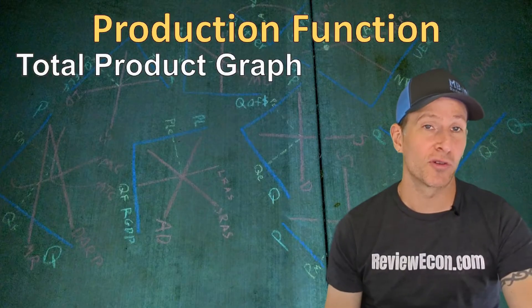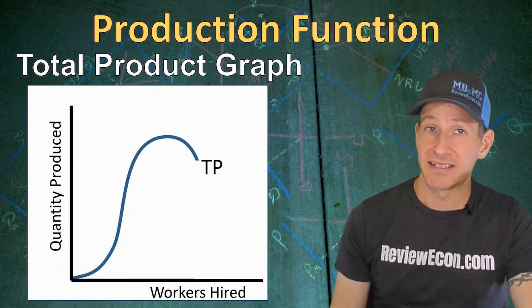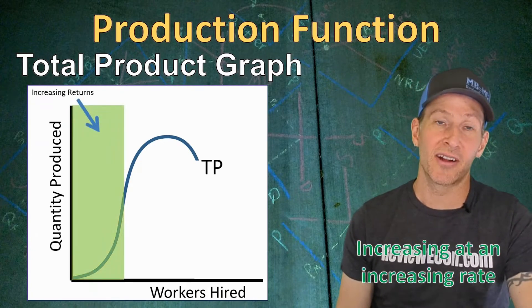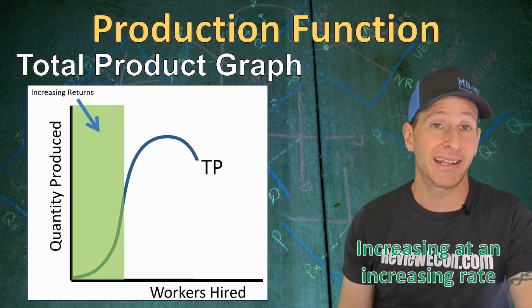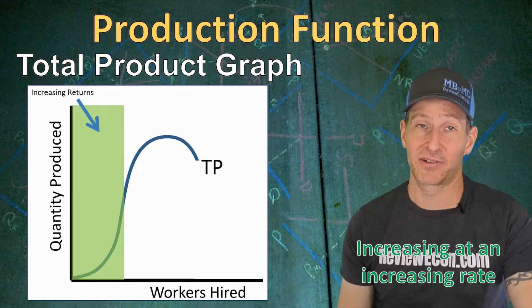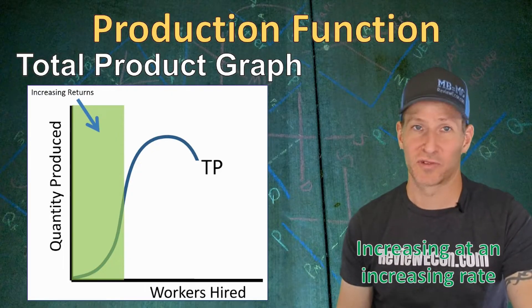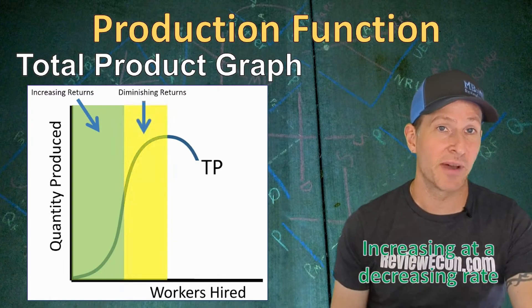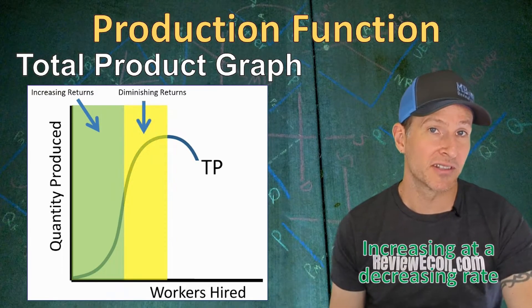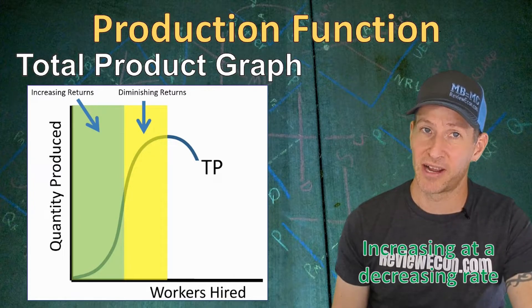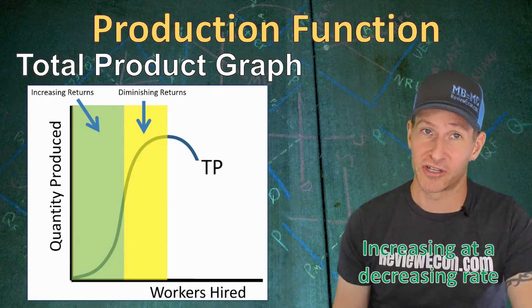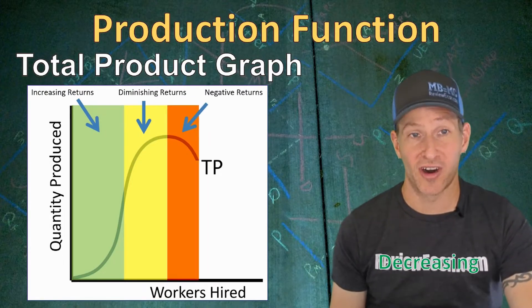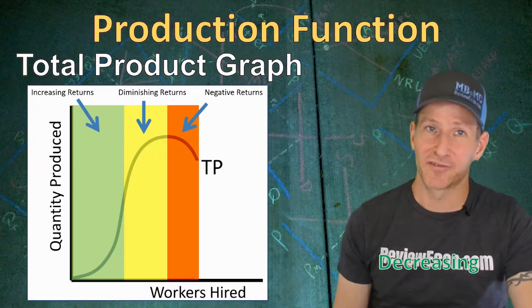If we go ahead and graph out the total product curve for this firm, we see different phases of production as more workers are hired. At low quantities of workers hired, each additional worker increases the total product at an increasing rate — we call that increasing marginal returns. Then we reach a phase where total product still increases but at a decreasing rate — diminishing marginal returns. Finally, as we hire more workers, total product will begin to fall, and we call that phase negative returns.